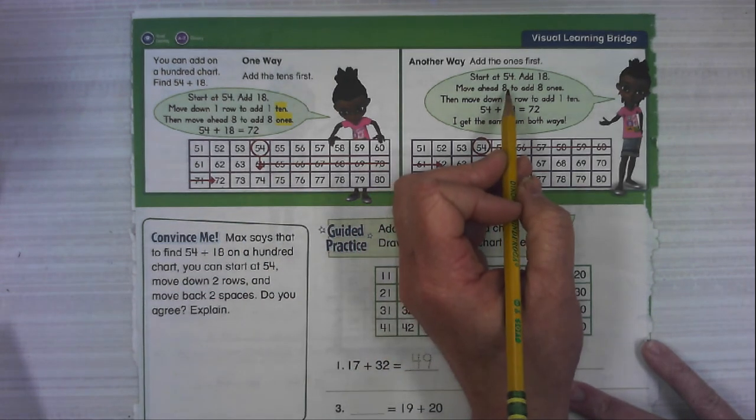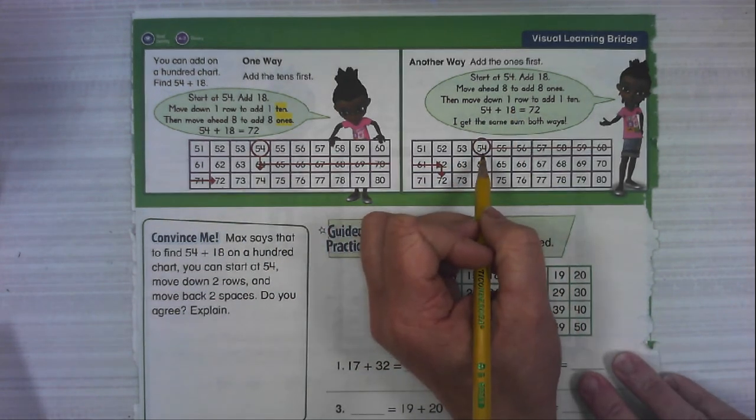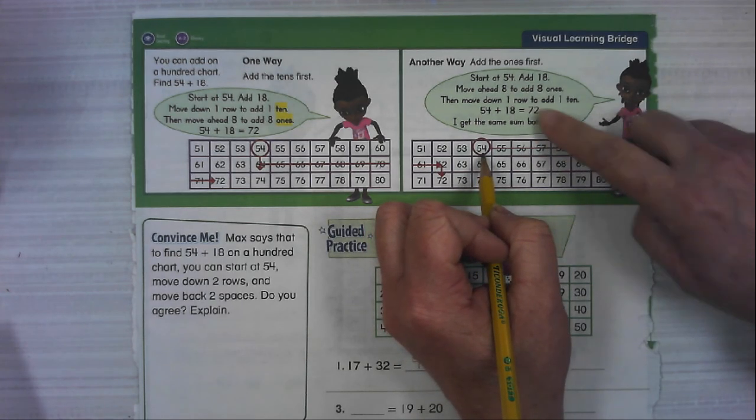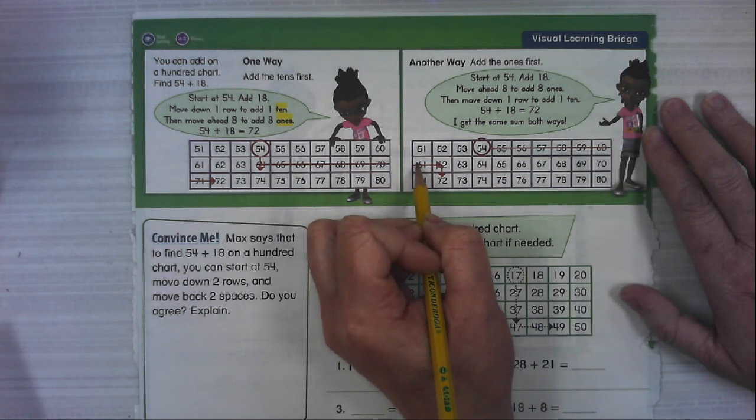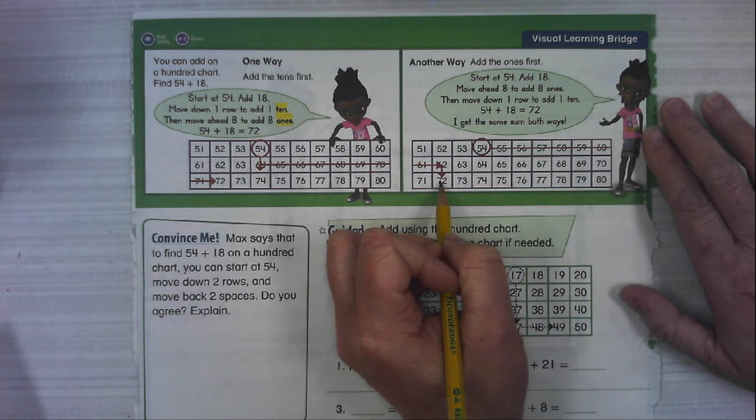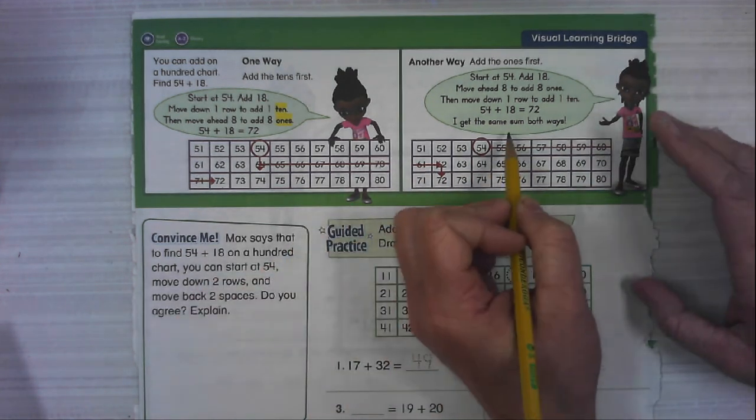Okay, you can also do the ones first. You can start at 54 and add eight ones. One, two, three, four, five, six, seven, eight, and then go down 110. Either way, you get the same sum.